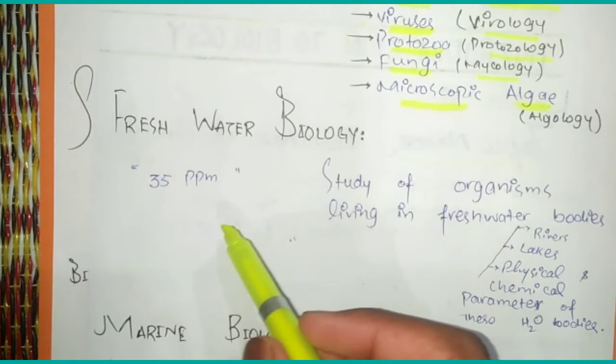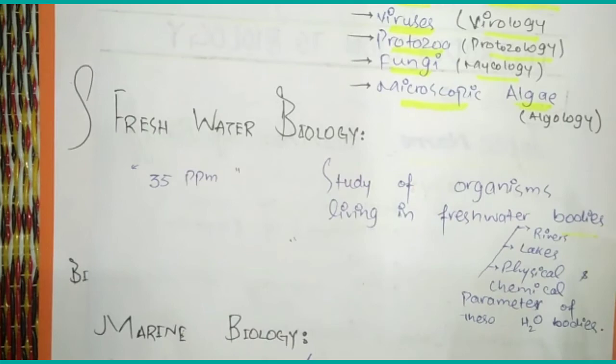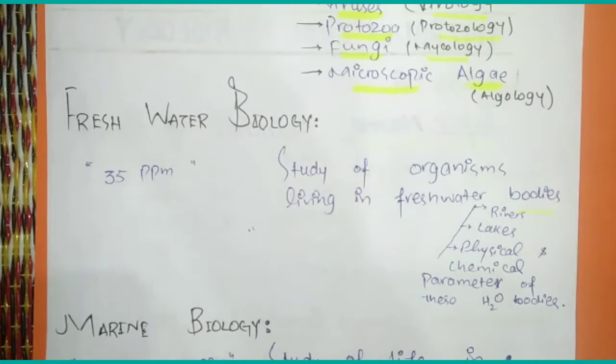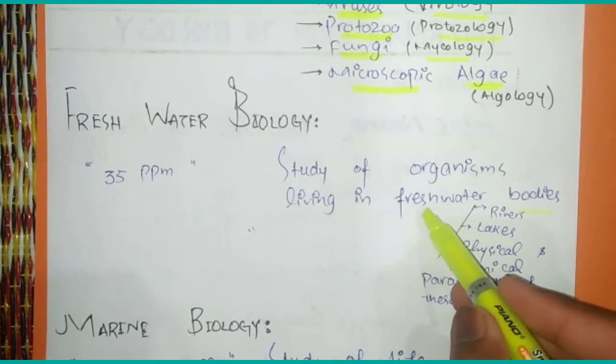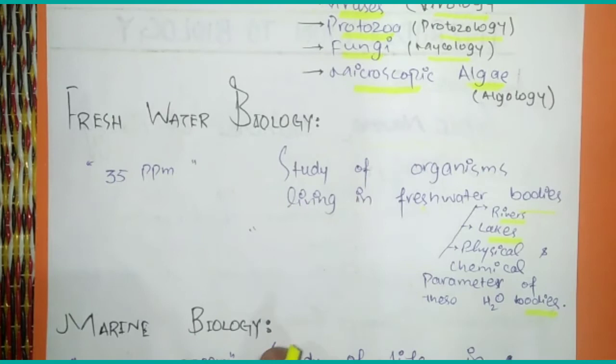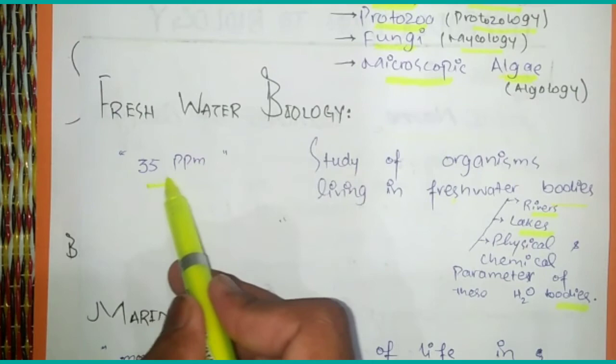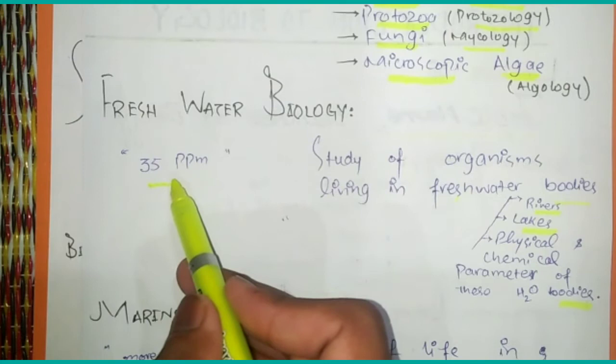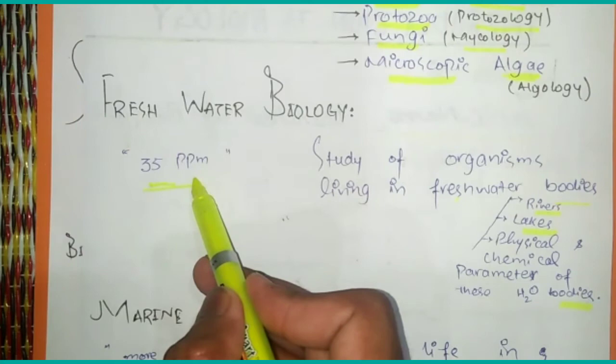Fresh water biology is the study of organisms in fresh water bodies such as rivers and lakes, including the physical and chemical parameters of these water bodies. Fresh water bodies are those whose ppm value is below 35 parts per million.